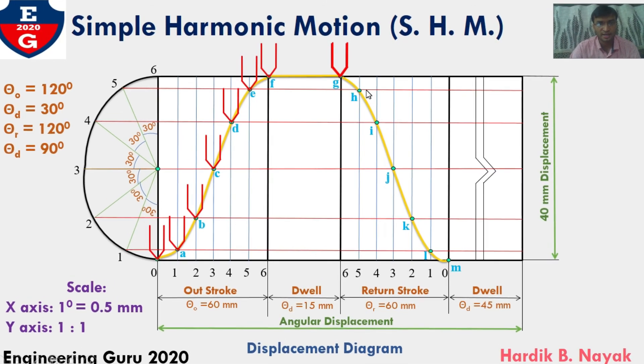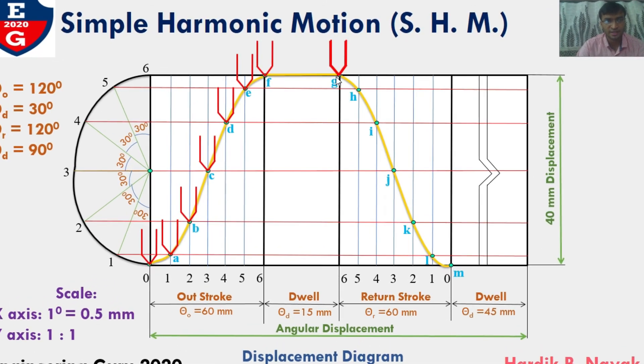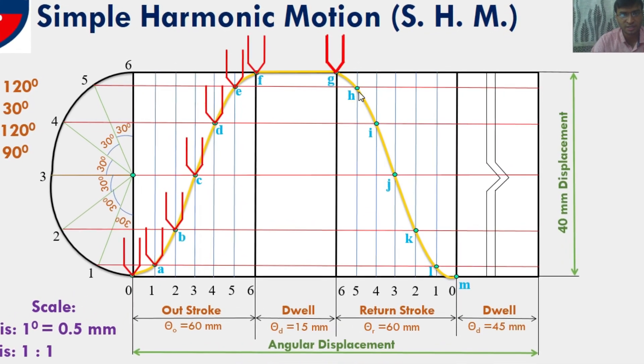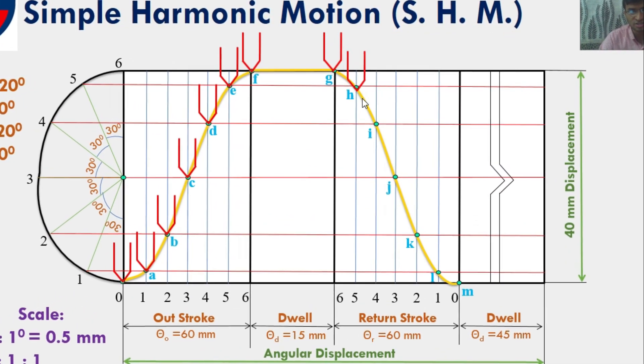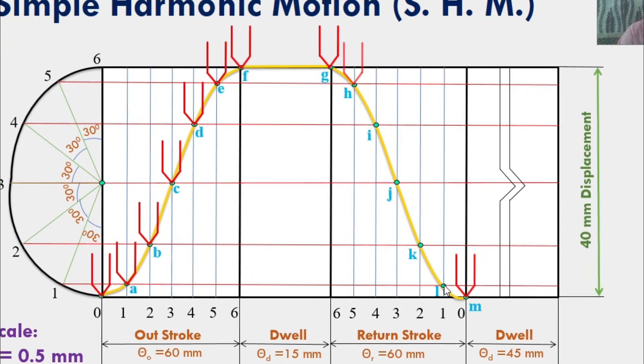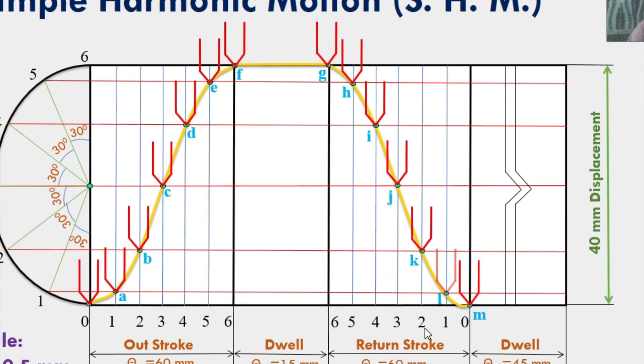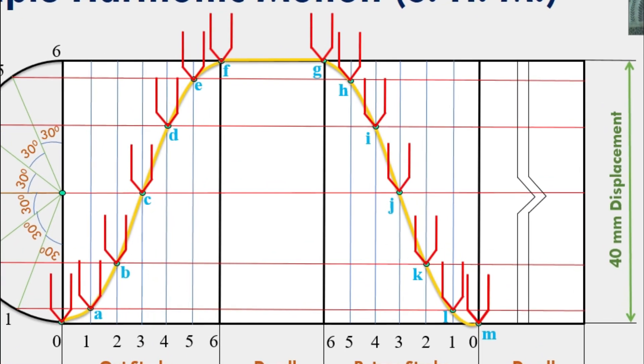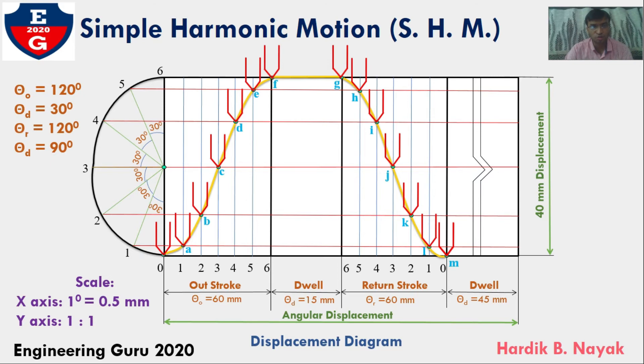After getting all the points, join all the points with smooth curve. At point G, follower is at maximum position. Then it takes next position at point H, I, J, K, L, M. Finally, it will be reaching minimum height. This point shows decreasing order of the follower when cam rotates. This is the SHM for return stroke.